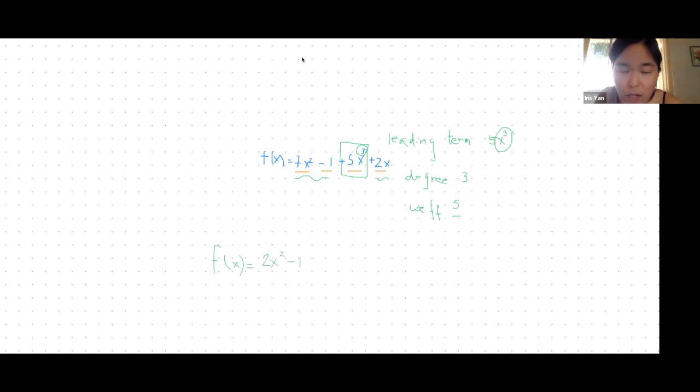So then here the leading term is 2x squared, the degree is 2, but the coefficient is also 2 in this case. Is that okay? All right, so that's it.